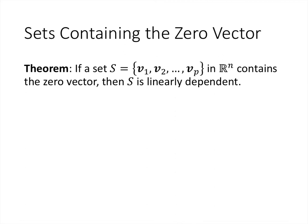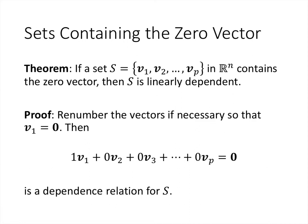Another quick way to identify a linearly dependent set: if the set contains the zero vector, it must be linearly dependent. The proof is straightforward — renumber so the zero vector is v1, then write the equation with coefficient one in front of v1 and zero in front of all other vectors. Since v1 is the zero vector, the entire left-hand side sums to zero. Since the coefficient of v1 is one (not zero), this is a valid dependence relation, so S is linearly dependent.